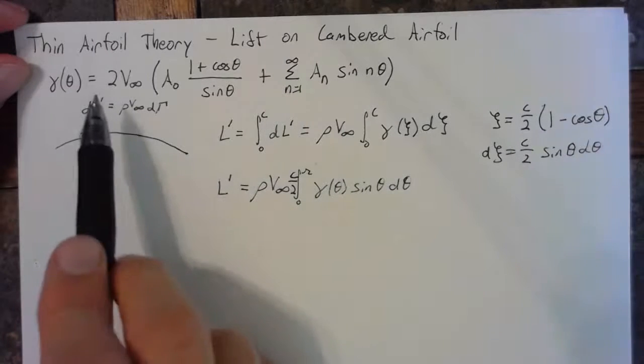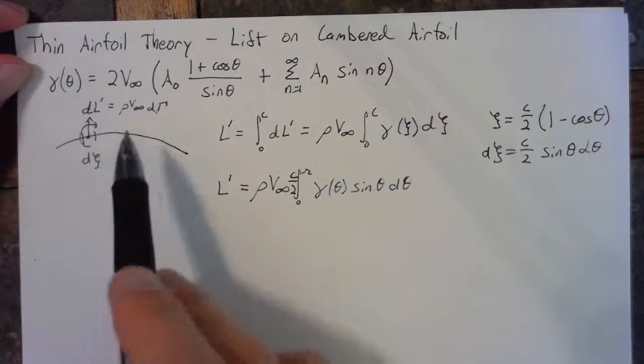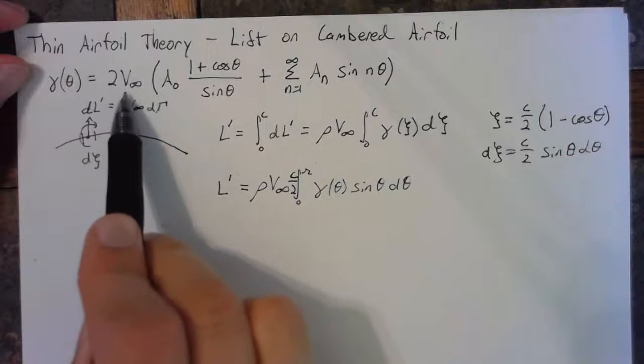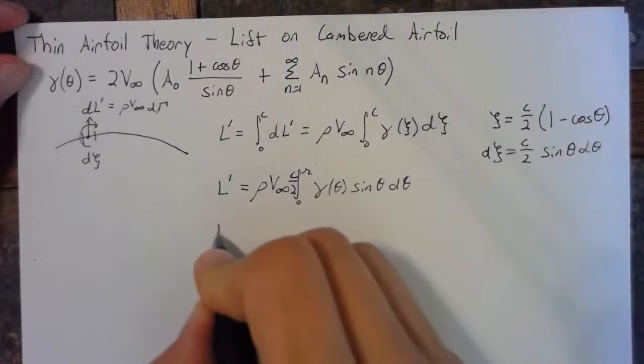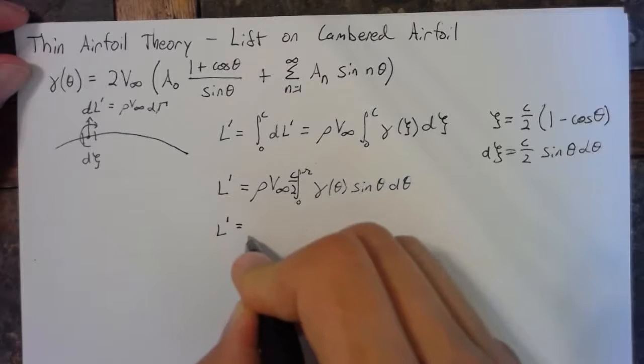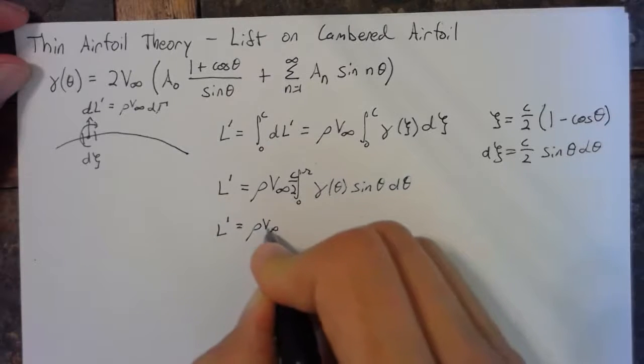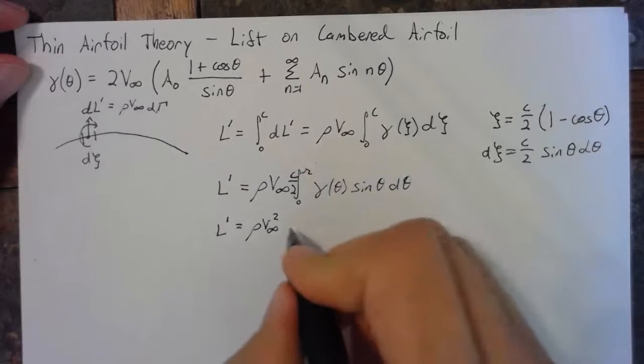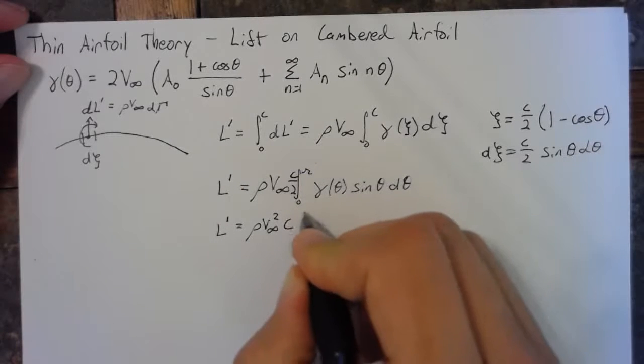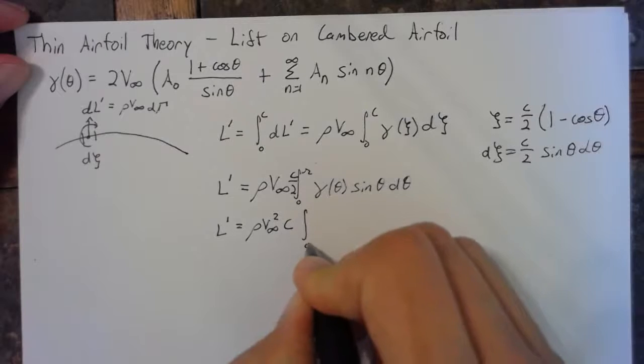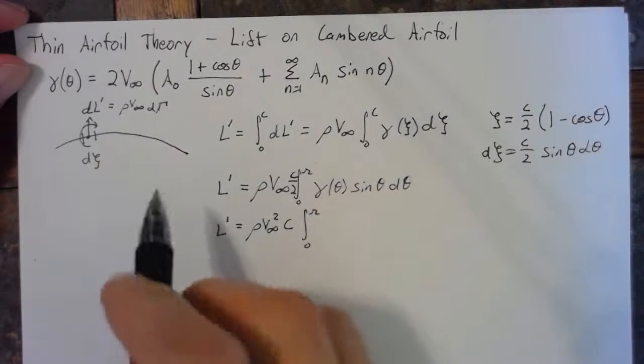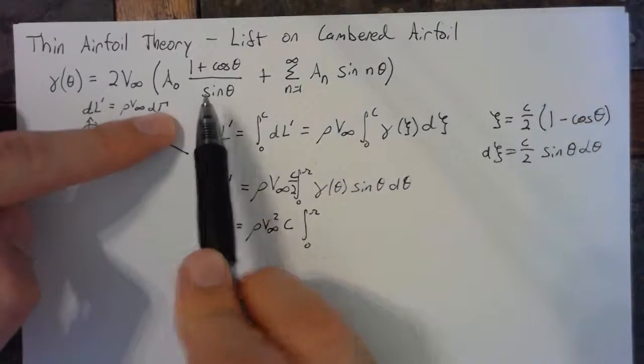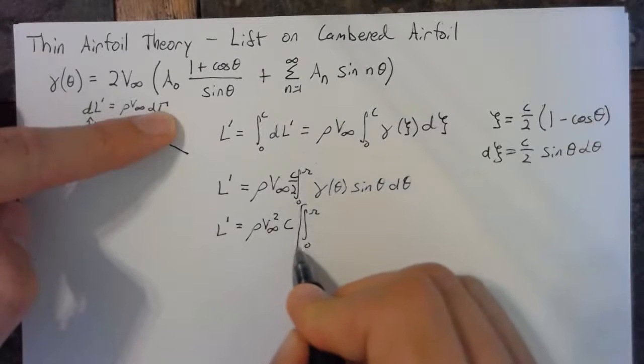So now we'll substitute in our gamma of theta. First off, we'll put this 2 in front of the integral. So our lift per unit span will be rho v infinity squared. This 2 will go away, and we'll be left with c times the integral from 0 to pi.